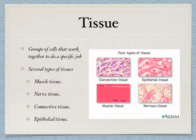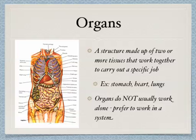Do you know what epithelial tissue is? I'll give you a hint — you're covered in it. Now we work our way up to the organ. An organ is a structure that's made up of two or more tissues that work together to carry out a specific job. Some examples include the stomach, heart, and lungs. Can you think of any others?